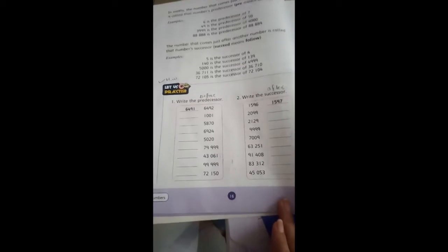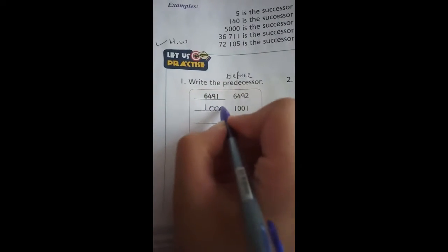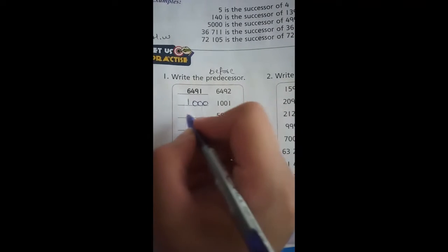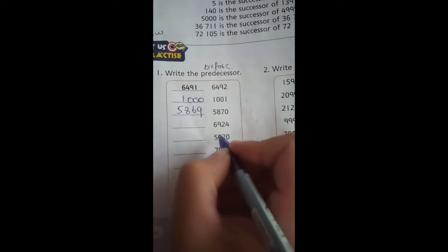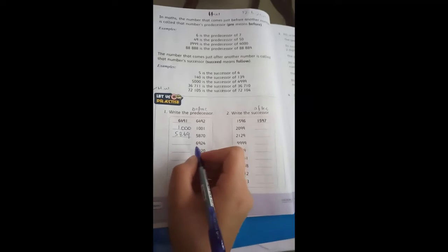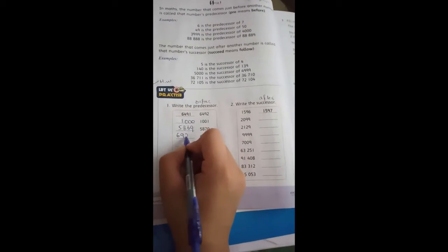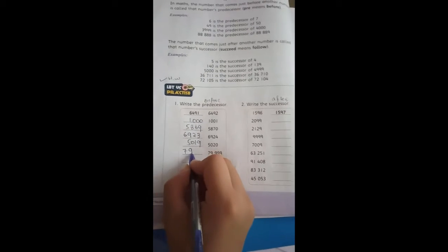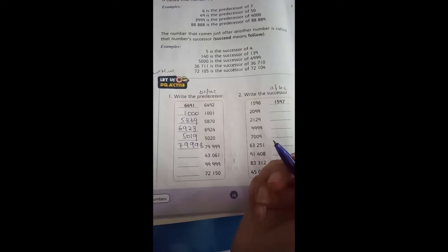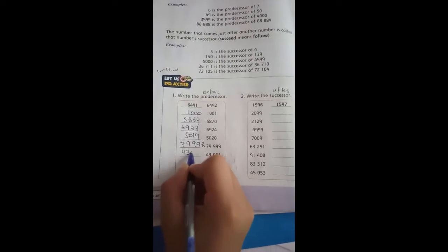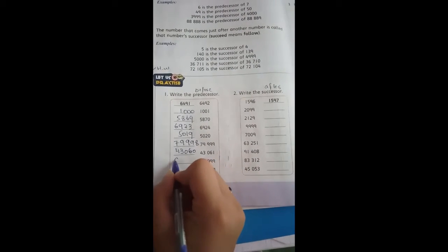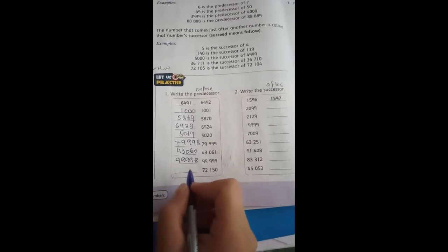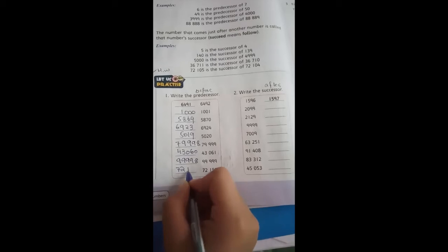So you can see page number 16, a practice question. 6491, the predecessor is 6490. 5870, the predecessor is 5869. 6925, the predecessor is 6924. 6924, the predecessor is 6923. 5020 is 5019. 79999 is 79998. 43061 is 43060. 100000 is 99999. 72150 is 72149.